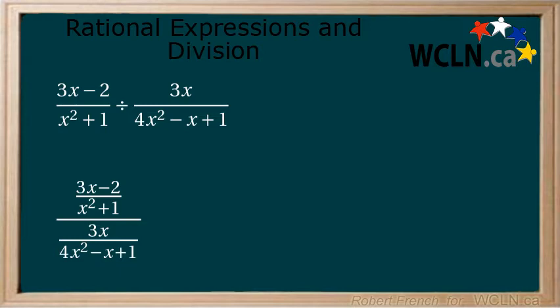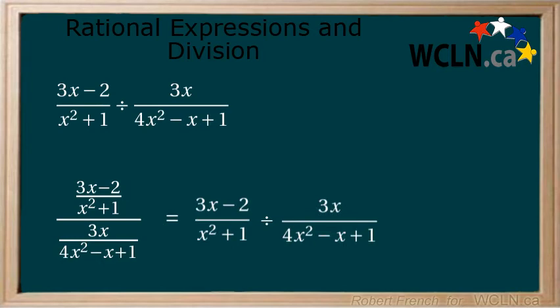The second form is a fraction that has a fraction for the numerator and denominator. This is another way of writing that the numerator is being divided by the denominator. We can shift it over and write it with a division sign. As we move forward you will come across division written both ways.